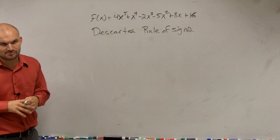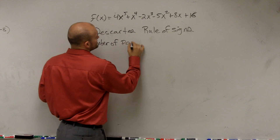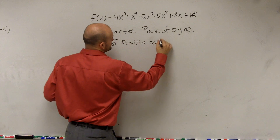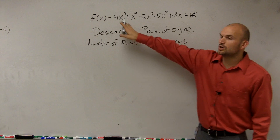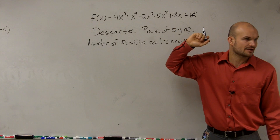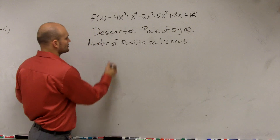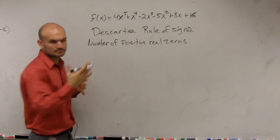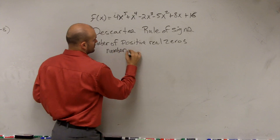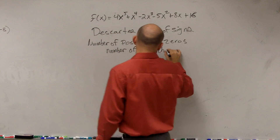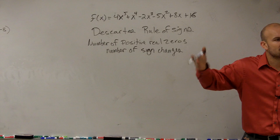So Descartes' Rule of Signs — rather than writing up the long description, what we're going to say is that the number of positive real zeros is going to be equal to the number of sign changes of your polynomial in standard form, and then minus a factor of two. So the number of positive real zeros is equal to the number of sign changes of your polynomial, and then minus a factor of two.